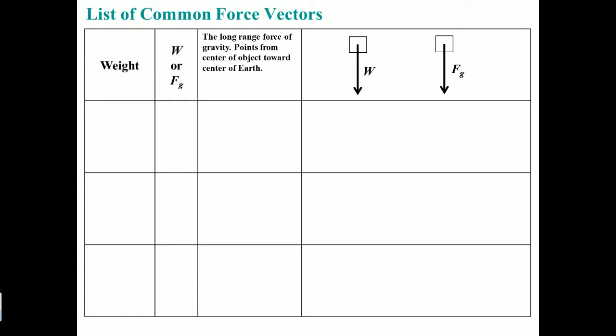It is a long-range force of gravity pointing from the center of the object towards the center of earth. Tension is always on a rope or a string. Although the string or rope is massless, the tension force exists along that path, so it pulls along a rope and is always away from the object.